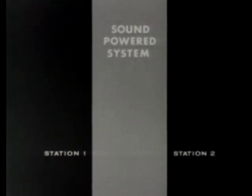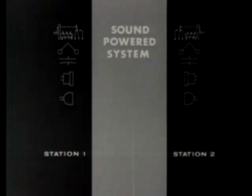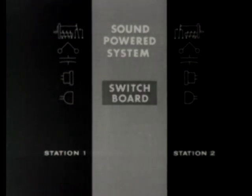Let's review the three basic telephone systems. The sound-powered system uses generators, ringers, capacitors, receivers, and sound-powered transmitters. If necessary, a switchboard can be used to handle many stations.